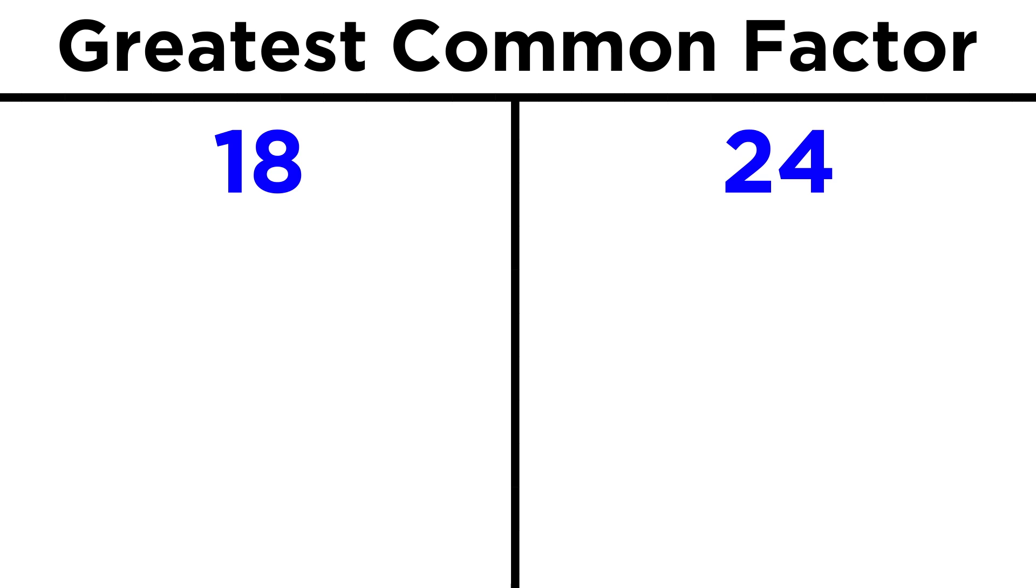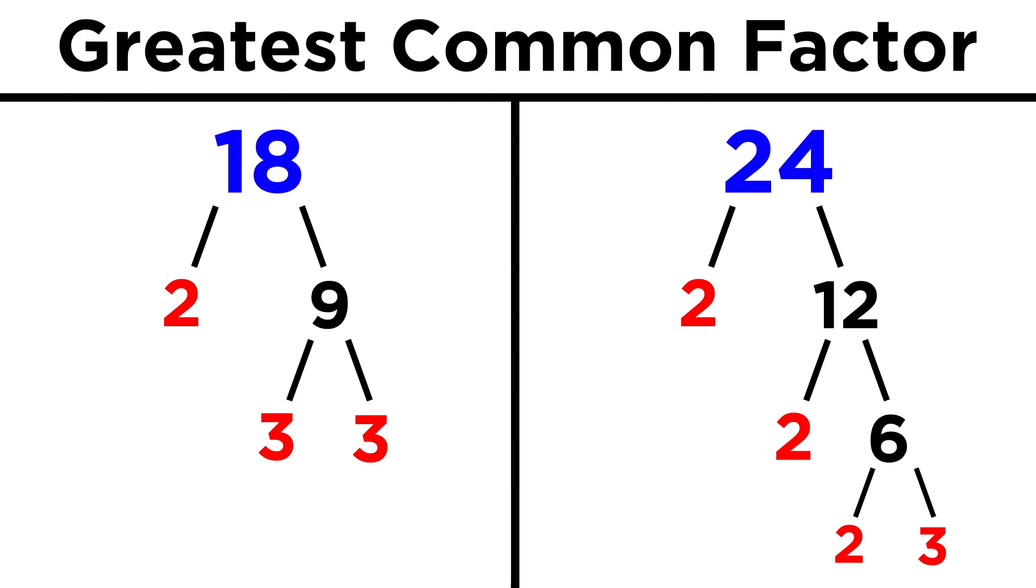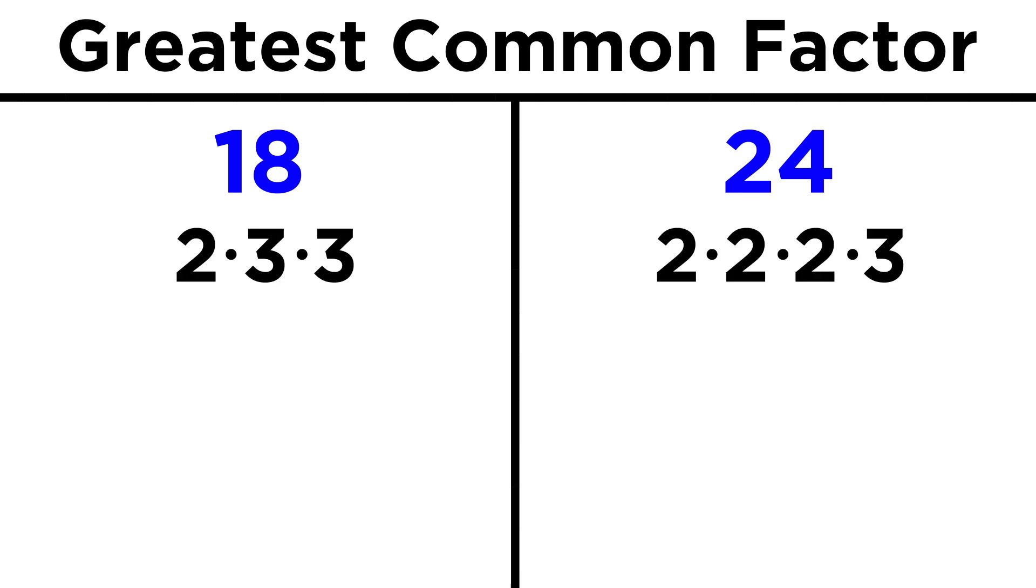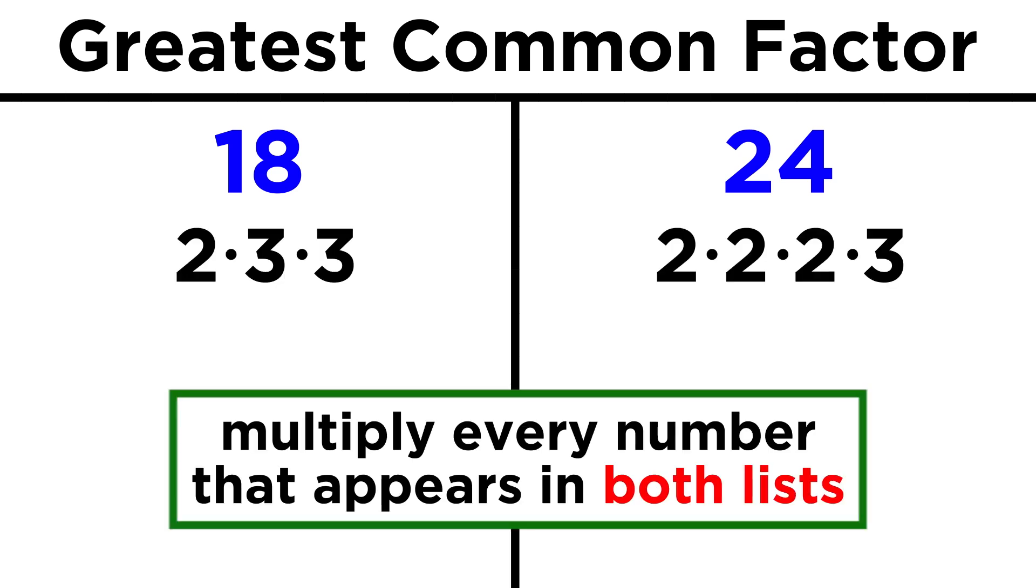Let's look at the same example we just did. We can carry out the prime factorization of both numbers, and that would give us two times three times three, and two times two times two times three. Once we have this, all we do is take all the numbers that appear in both lists, as many times as they appear in both of the lists, and multiply them together.